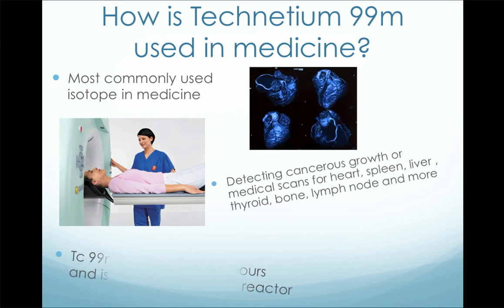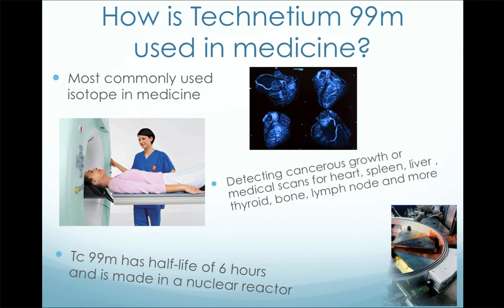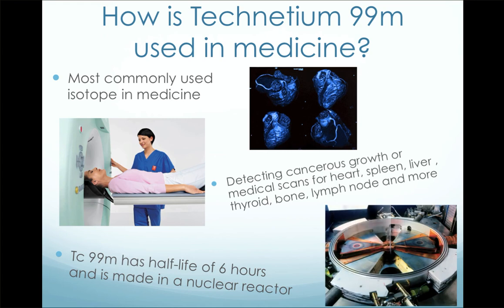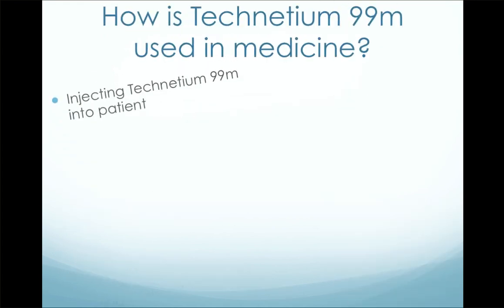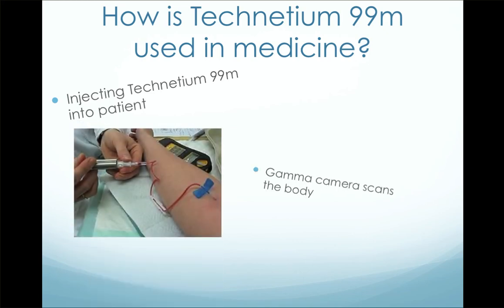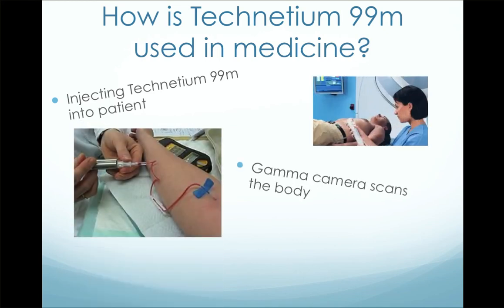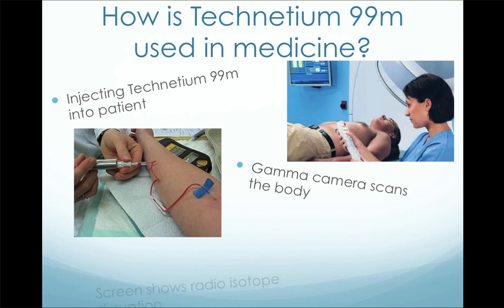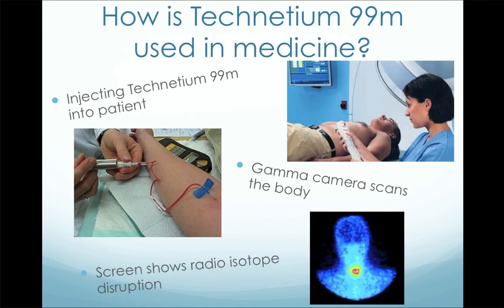Did you know that technetium-99m has a short half-life of 6 hours? So as soon as it has been made in the nuclear reactor, it is sent off to hospitals for medical purposes very quickly. It is used by injecting technetium-99m into the patient, and then a gamma ray camera is used to scan the body to pick up the radioisotope distribution from the gamma rays emitted. When there are high concentrations of gamma rays, it indicates the illness.